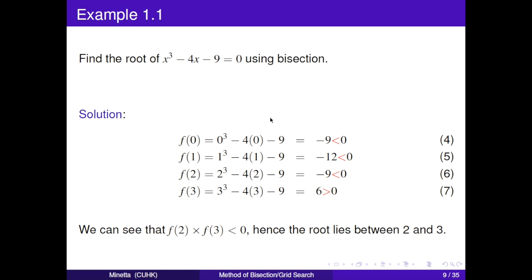To solve it, we check the function value when x equals 0, 1, 2, and 3. We find that when x equals 0, 1 and 2, the function value is less than 0. Where x equals 3, f(3) is larger than 0. We can say that f(2) times f(3) is less than 0. Hence, the root lies between 2 and 3.